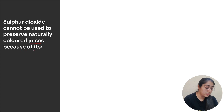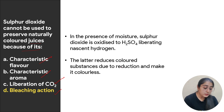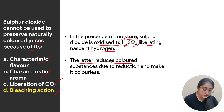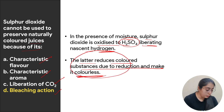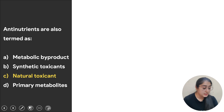Next: sulfur dioxide cannot be used to preserve naturally colored juices because of its — options are characteristic flavor, characteristic aroma, liberation of CO2, or bleaching action. In the presence of moisture, sulfur dioxide is oxidized to H2SO4, liberating nascent hydrogen, which then reduces colored substances and makes them colorless. Therefore it has a bleaching action and cannot be used for naturally colored juices — the correct option is bleaching action.